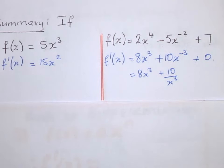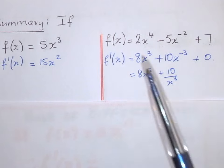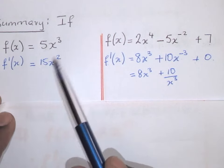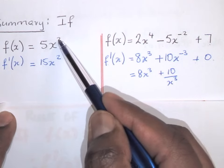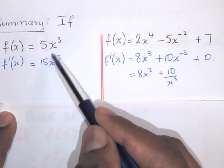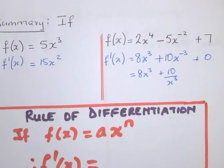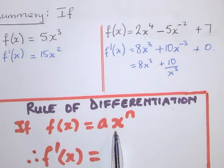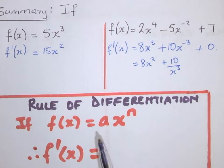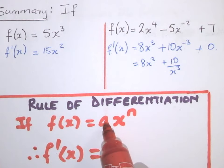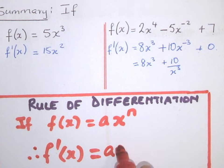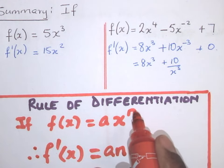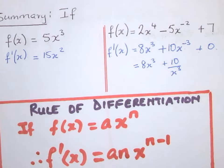So in this case, this is giving us the rule of how to find the derivative of some functions — not all of them. Looking at our example again: take the 5, multiply with the exponent 3 to get 15, write x, and subtract 1 from the exponent. Here is the rule of differentiation: if we are given f(x) equals ax to the power n, then the derivative will be a times n, times x to the power n minus 1. That is the rule.